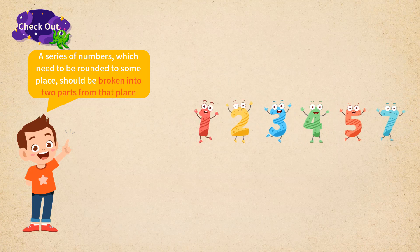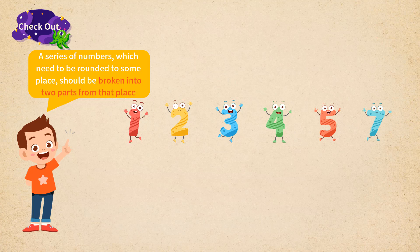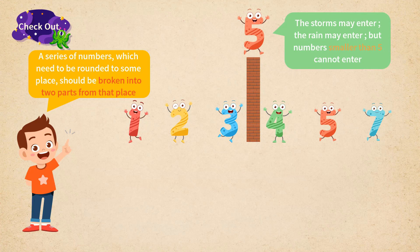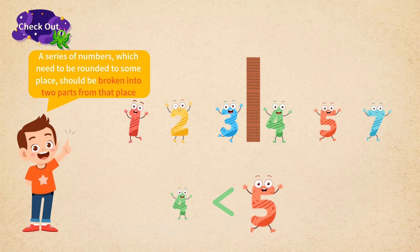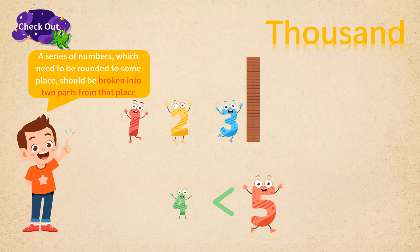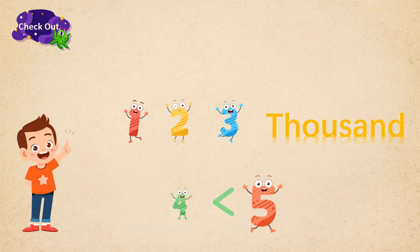For example, if we need to round this number to the place of thousand digit, there must be a blocker after the thousand digit. The first number blocked by the number 5, as half of 10, must be compared with its size. If unfortunately the number is smaller than 5, then sorry, it is not qualified to pass by 5. All the numbers behind need to be dismissed. Then the number 123,453 is written as 123,000. To summarize,